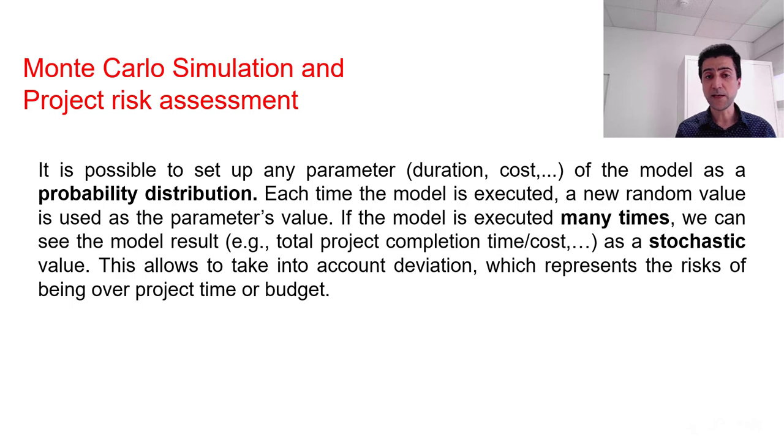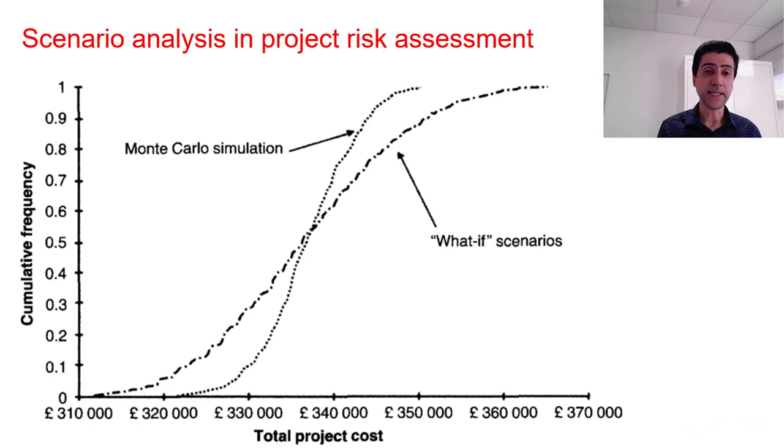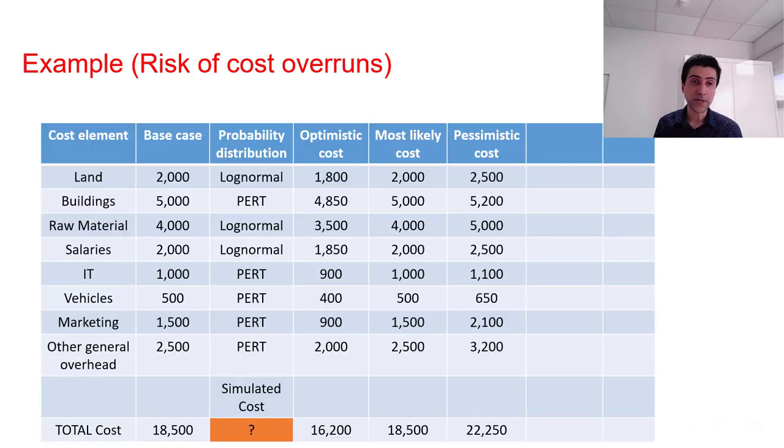As you can see, one example in here, which is focused on project costing, you can see that a base model using Monte Carlo simulation is developed. And then we can look into different scenarios, best case scenario, worst case scenario and compare those. We will have an example. This particular example is a mini project with different cost centers, including land and buildings and raw materials. As you can see, the base case is specified, but we want to be more flexible and using probability distributions for those cost centers. As an example for land, we are using a log normal distribution. Then the optimistic cost is 1800, pessimistic cost is 2500, and the most likely cost of 2000 is assigned.